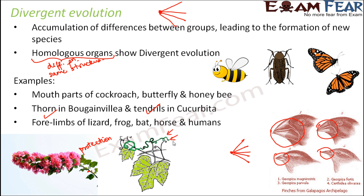Forelimbs of lizard, frog, bat, horse, and humans: if you look at the purpose of forelimbs in each of them — a lizard crawls and its forelimbs help it crawl, whereas our forelimbs are hands that help us do various activities and don't primarily help in locomotion. In the case of a bat, the forelimbs are modified to help it fly. All of them have different types of movements and their forelimbs perform different functions accordingly, but structure-wise and origin-wise all of these are forelimbs — structurally and in origin they are the same, but function-wise they are different.